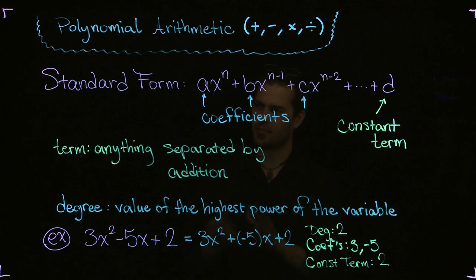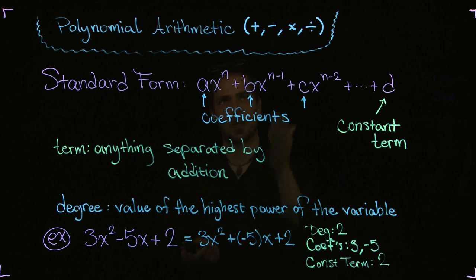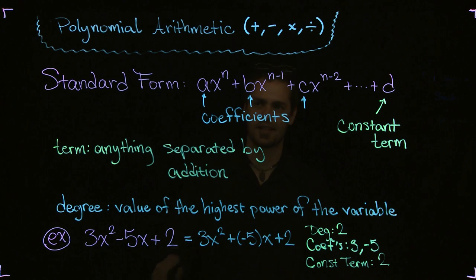So this is the basic nomenclature, the basic vocabulary surrounding polynomials. In the next few videos I will do the operations of addition, subtraction, multiplication, and division, and I will also talk about multivariate polynomials. Let's stop here and move on to the next in the series.